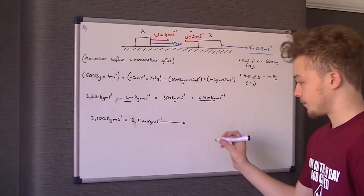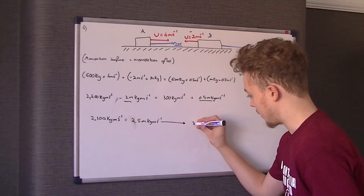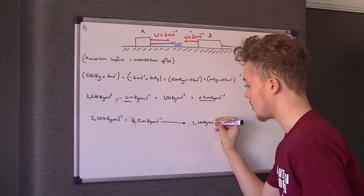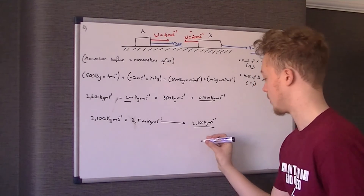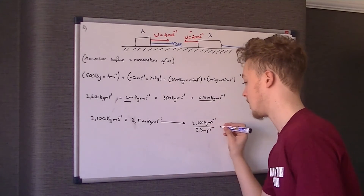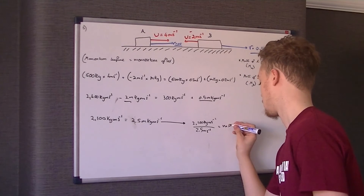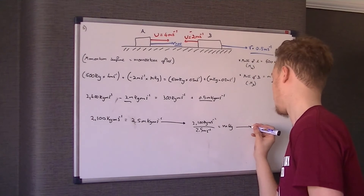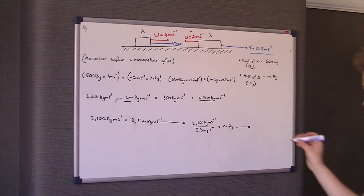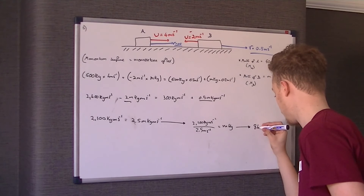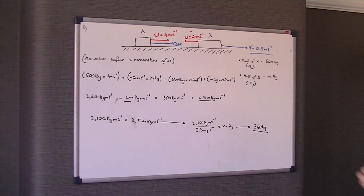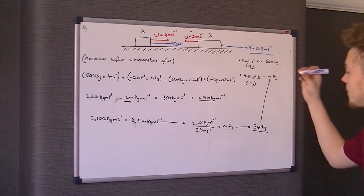So if we do that, we need 2,100 kilogram metres per second over 2.5 metres per second. If you work that out and sub it into your calculator, you should get a value for M which is 840 kilograms. That is therefore the mass of B.